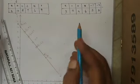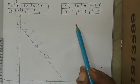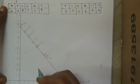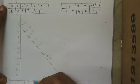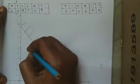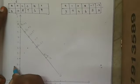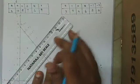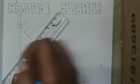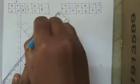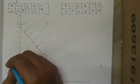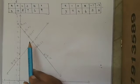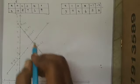Next, for x minus y equals minus 4, we plot the points: (1, 5), (0, 4), (2, 6), and (minus 1, 3). After plotting and joining these points, this is the line for the equation x minus y equals minus 4. Now these two lines will intersect at one point, and that intersection point is the solution for the given pair of equations.